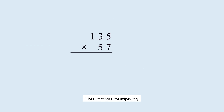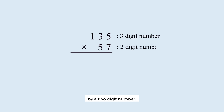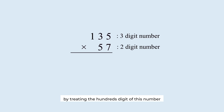This involves multiplying a three-digit number by a two-digit number. In this case, you can calculate it by treating the hundreds digit of this number as zero.